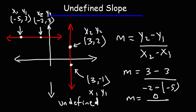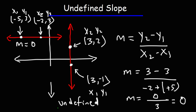Here we have negative two plus five, which is positive three. So anytime you have a zero in the numerator of a fraction, the entire value of that fraction will be zero. It doesn't really matter what the x values are — the slope of a horizontal line will always be zero, and the slope of a vertical line will always be undefined.